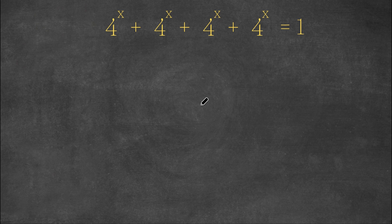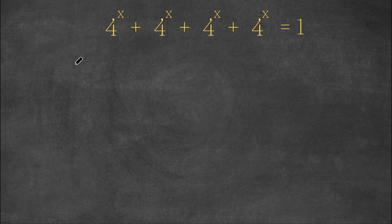What I'm first going to do is factor out 4 to the power of x from our left-hand side, because all the terms here are 4 to the power of x. So factoring that out would simplify things by a lot.